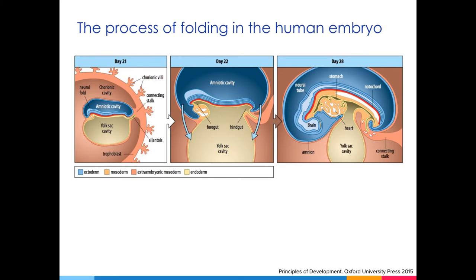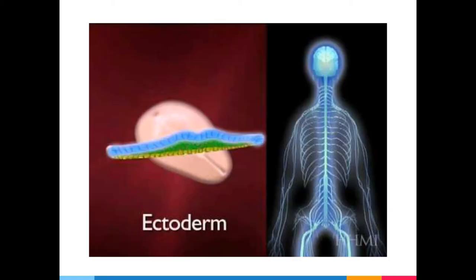So how do we go from a flat pancake of cells to a three-dimensional organism? In humans, the process involves the folding of the embryo and the expansion of the amniotic cavity. Between embryonic days 21 and 28, the flat embryo changes into the three-dimensional form of the body. Lateral folding brings the edges of the flat embryo together ventrally, while expansion causes both ends of the anterior-posterior axis to curl down. This flexure is accompanied by expansion of the amniotic cavity, which comes to surround the embryo, and shrinking of the yolk sac.